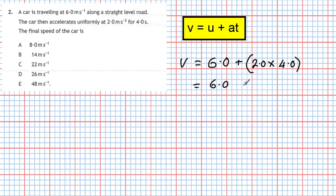So we do that in our calculator. We get 6.0 plus 8.0, and therefore we're going to get a value of 14 metres per second. So the final speed of the car will be 14 metres per second, which will be answer B.